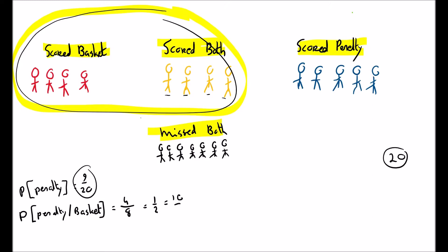Are they the same? No, they're not the same. That means if I take the whole group and pick someone, the chances of that person having scored a penalty is 9 out of 20. However, if I just concentrate on the people who scored a basket and pick from that group, the probability of those people scoring a penalty is 10 out of 20. Now, 10 out of 20 is a better probability than 9 out of 20. So if I choose the people who scored a basket, I have a better chance of finding one who also scored a penalty. That means there is a dependence there.